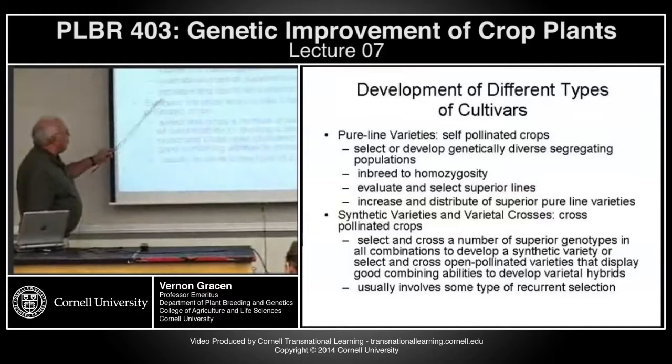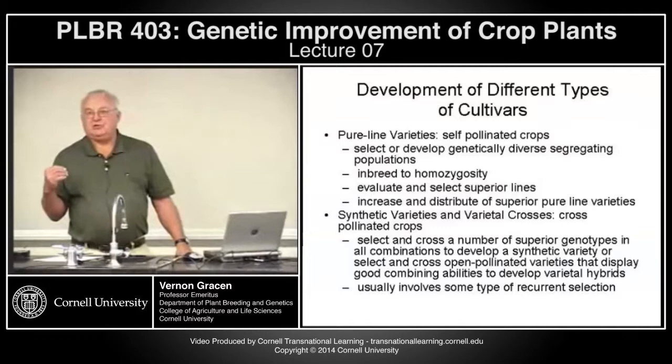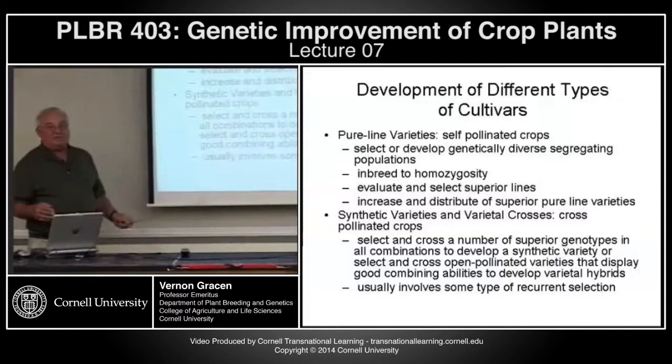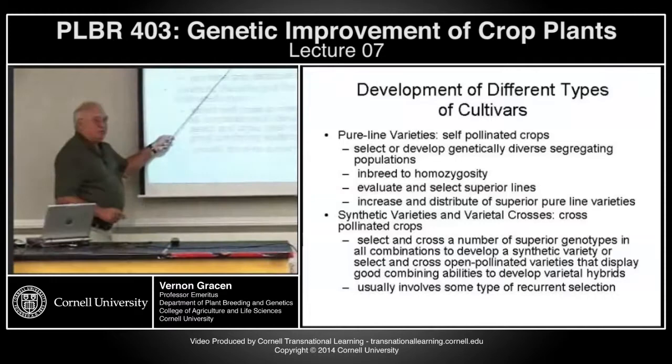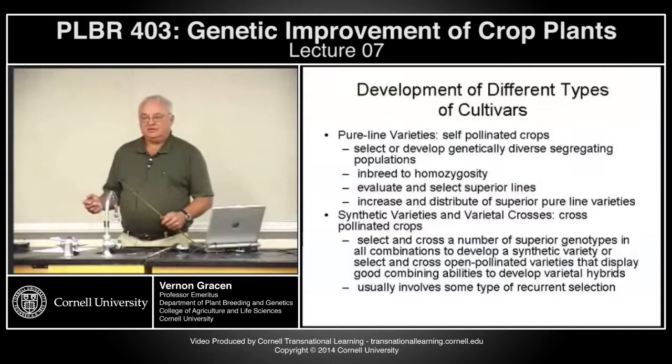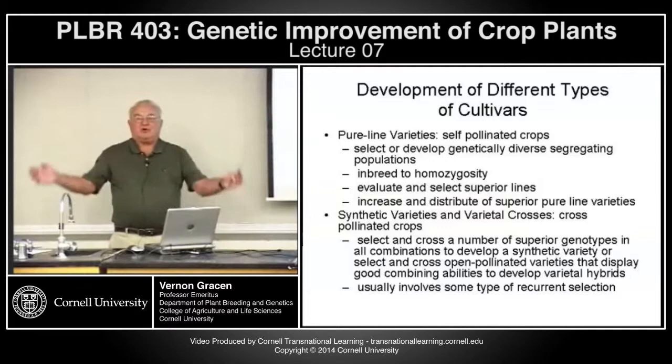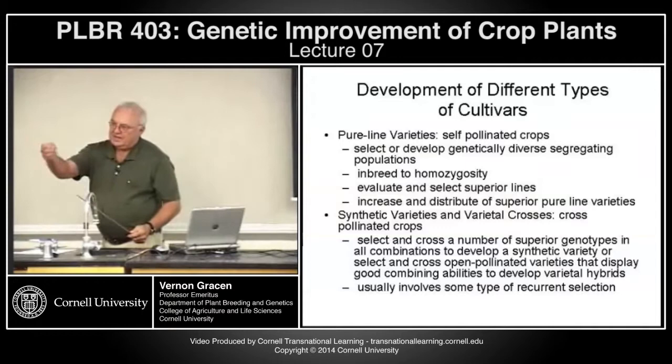In both cases of breeding cross-pollinated crops, we deal with recurrent selection. In self-pollinated crops, the strategy is to get as much genetic diversity or variation as possible, then hurry back to a uniform homozygous state. In cross-pollinated crops, you can't get that uniform homozygous state and it doesn't do you any good. So you take heterozygous cross-pollinated individuals and recombine and select, recombine and select — that's recurrent selection.